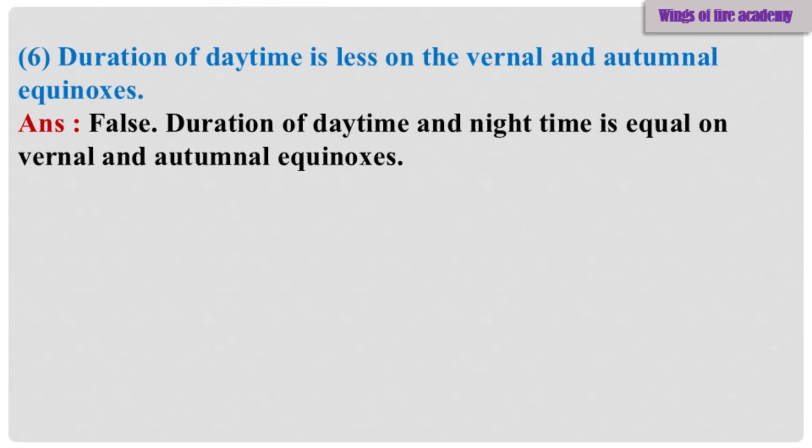Sub-Question 6: Duration of daytime is less on the vernal and autumnal equinoxes. Answer: False. Duration of daytime and nighttime is equal on vernal and autumnal equinoxes.